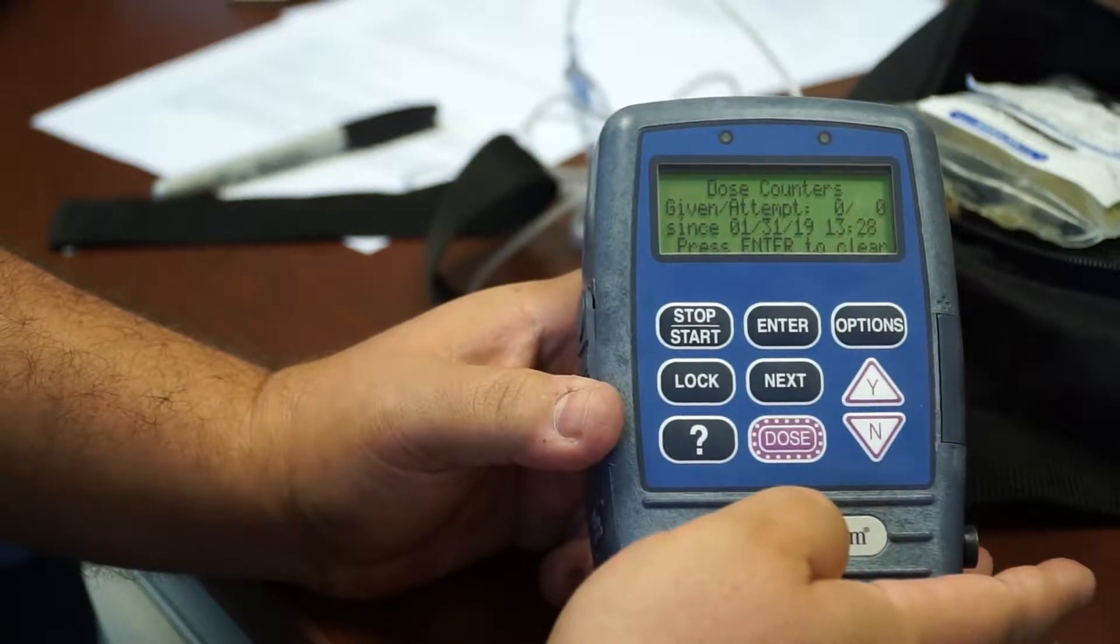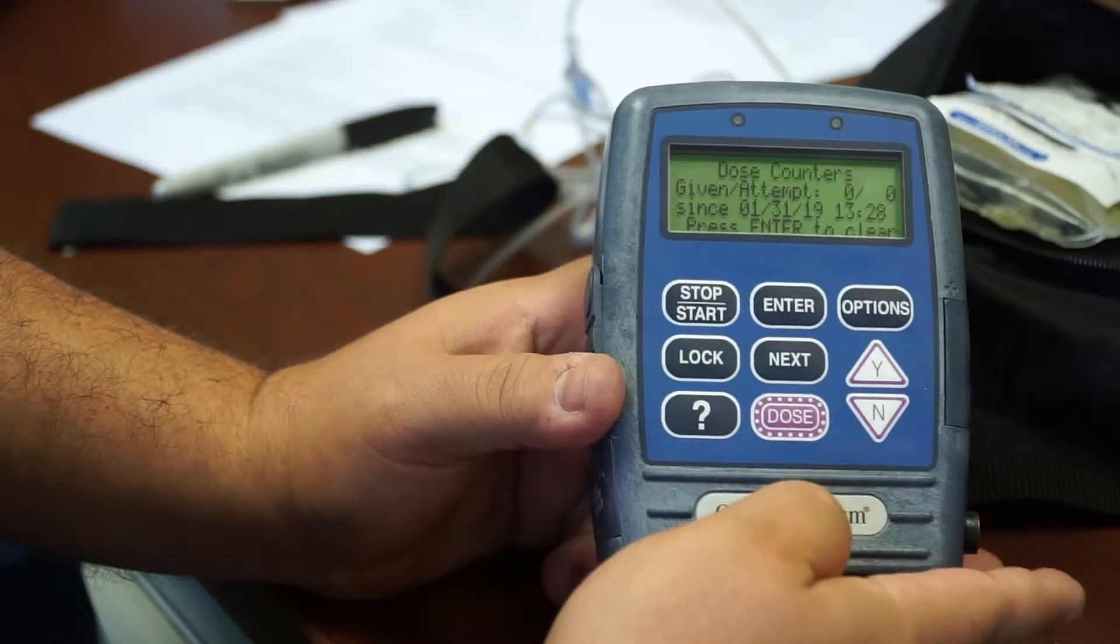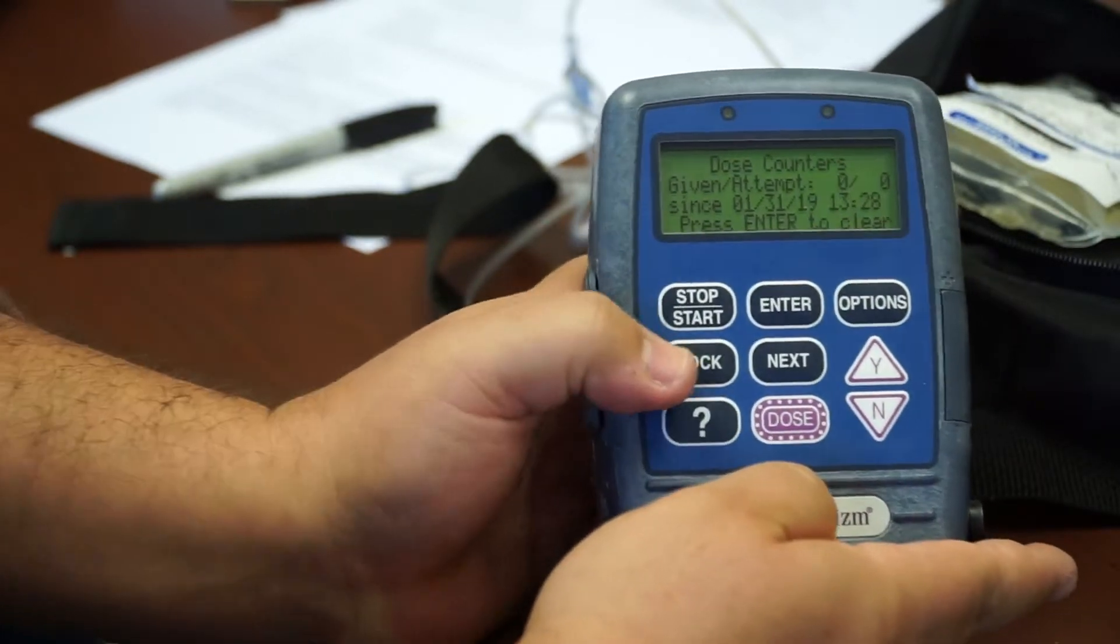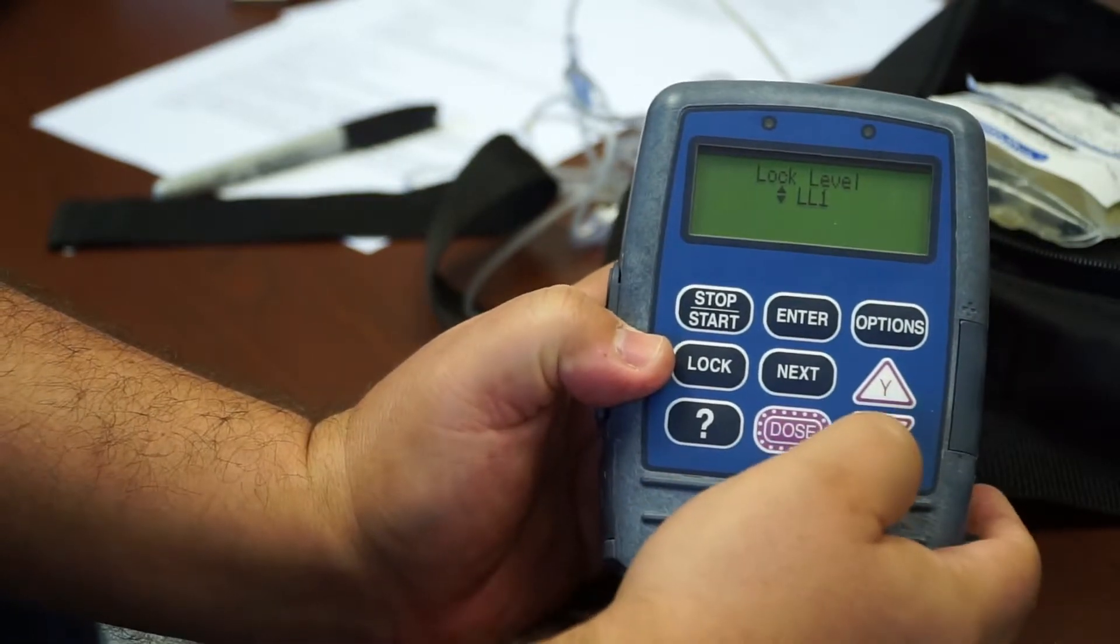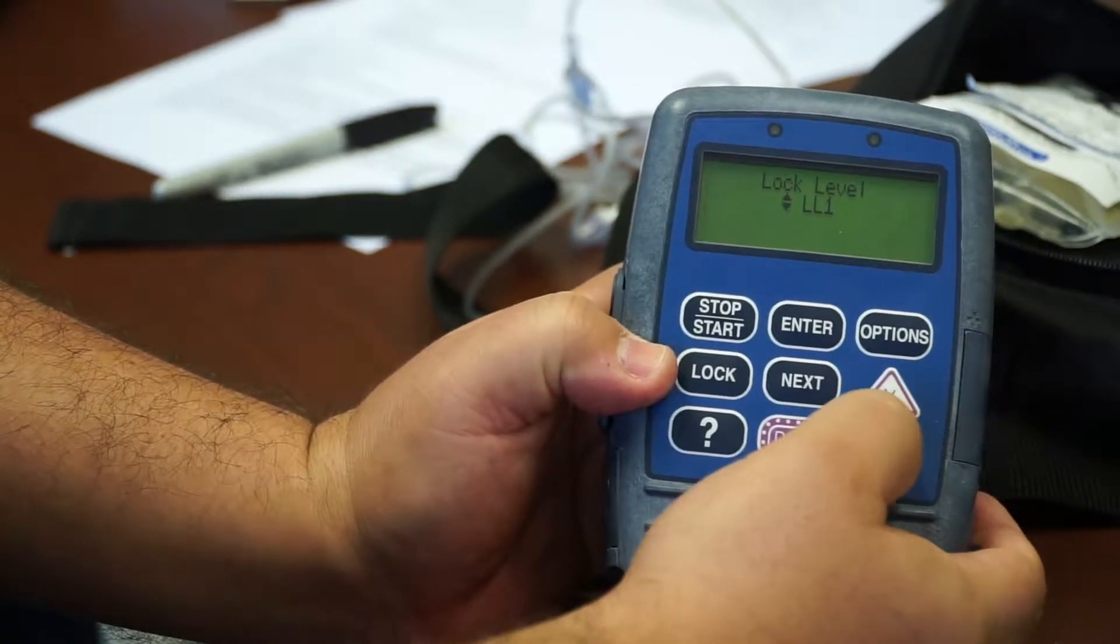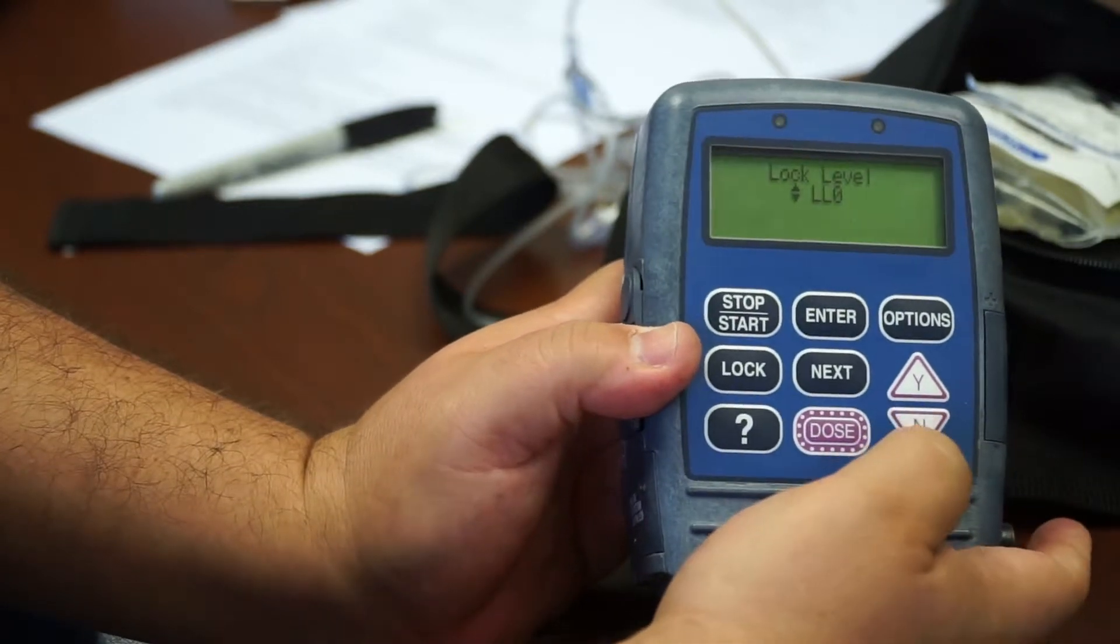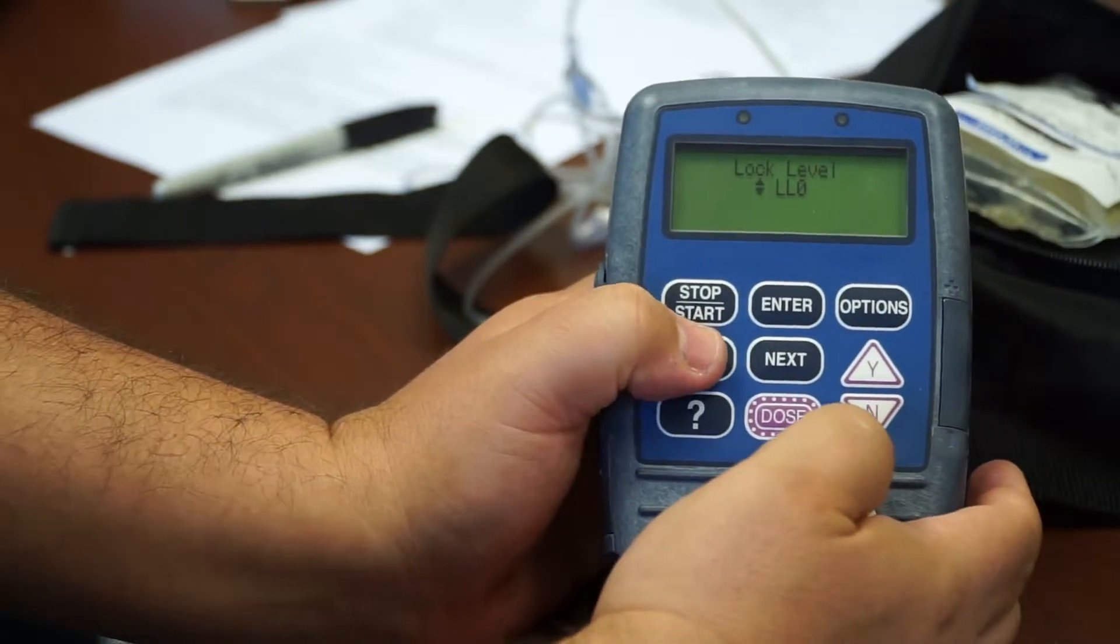The way that we do that is by first changing the lock level. In order to change the lock level, we press on lock. We switch the lock level to zero by pressing the down arrow, and then we press lock again.